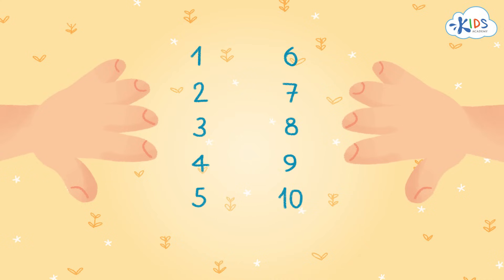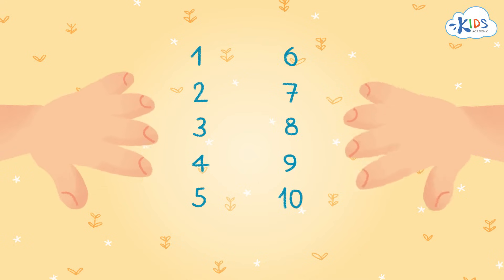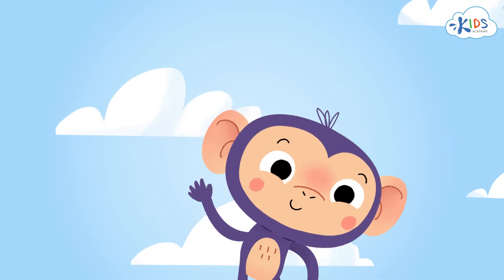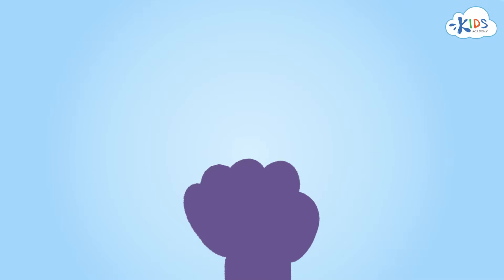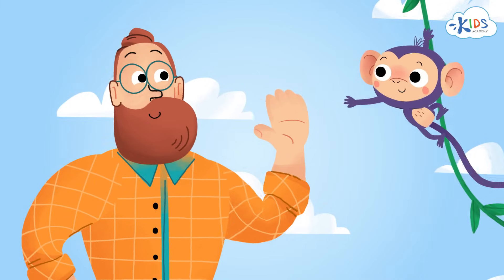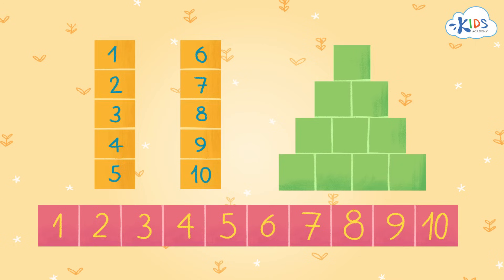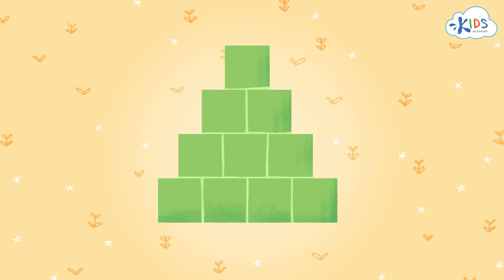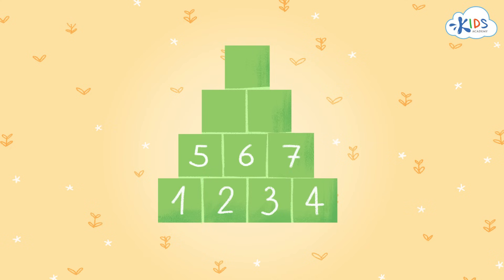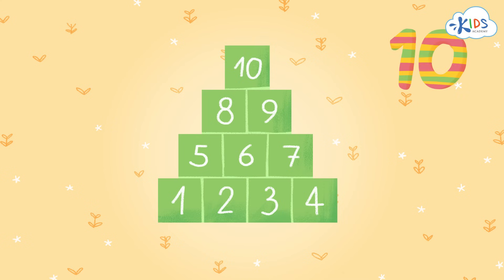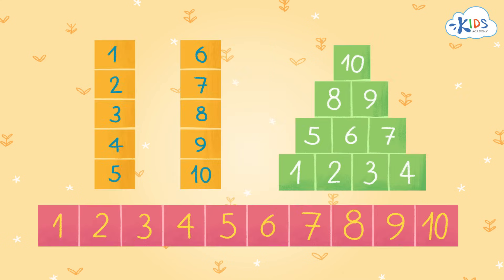Just like the fingers on your hands — one hand has five fingers and two hands makes 10. Hey look, that monkey has five fingers too: 1, 2, 3, 4, 5 — give me five, little buddy! Look at this group. Do you think there are 10 green blocks in this pyramid? Let's count: 1, 2, 3, 4, 5, 6, 7, 8, 9, 10. Yes, this group has 10 too. Sometimes you can find 10 by seeing one of these patterns. Which group was easiest for you to count?